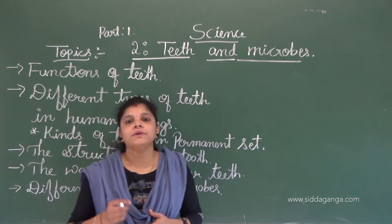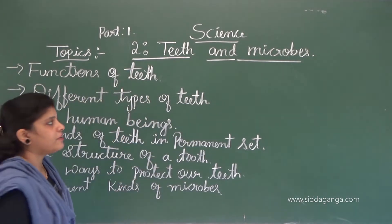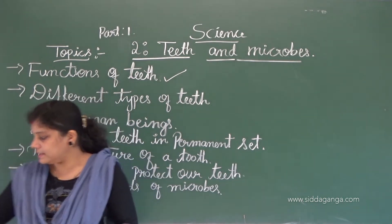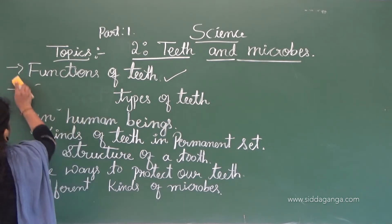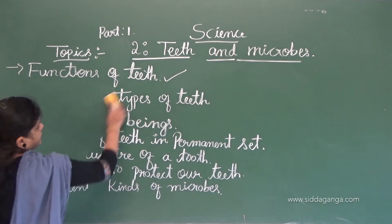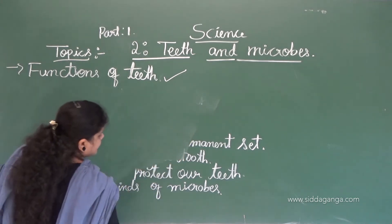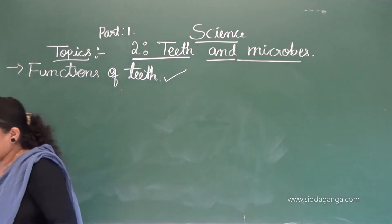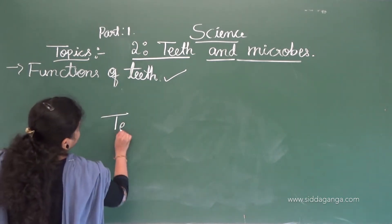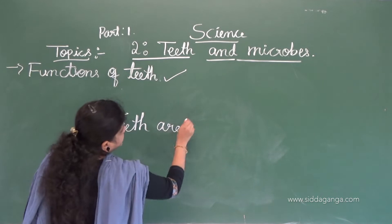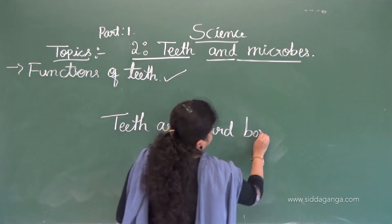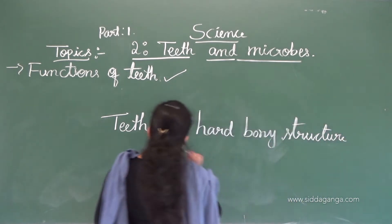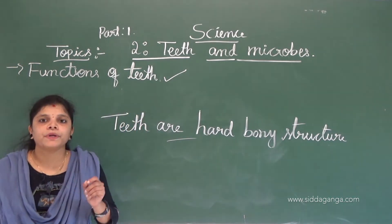First, we are going to discuss about the functions of teeth. Teeth are hard bony structures. When you like to eat any solid things — like an apple, a mango, or sugar cane — we use our teeth to bite and chew the food.